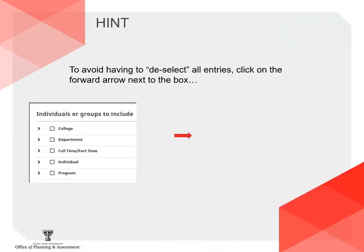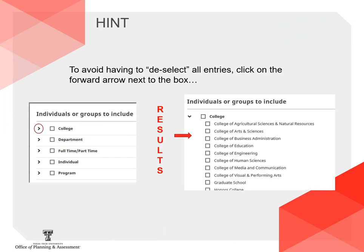Here is a hint about clicking the boxes within the report parameters: click on the forward arrow next to the box, not on the box itself. This will bring up all choices but not select them.